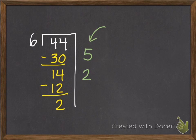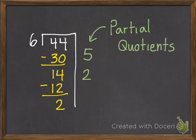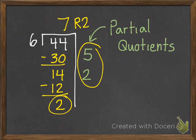So now I have these partial quotients. Quotients is the answer to a division problem, and each of those are parts of it. So I need to put those parts together. 5 plus 2 equals 7, and I have a remainder in this one. So the answer, or the quotient, is 7 remainder 2.